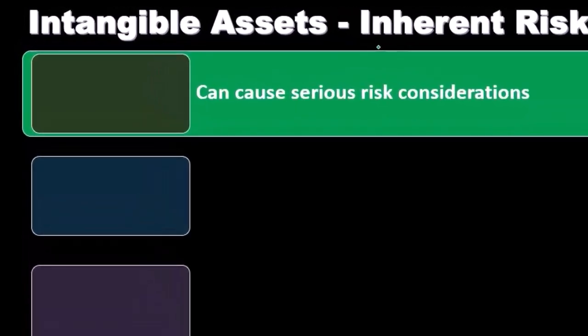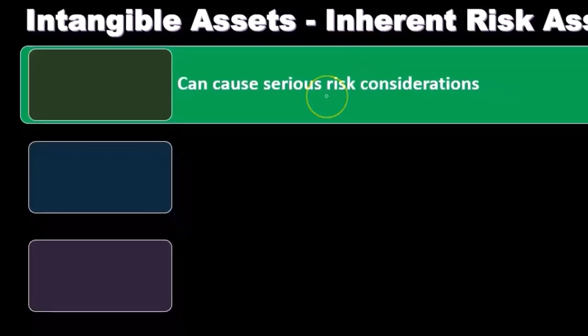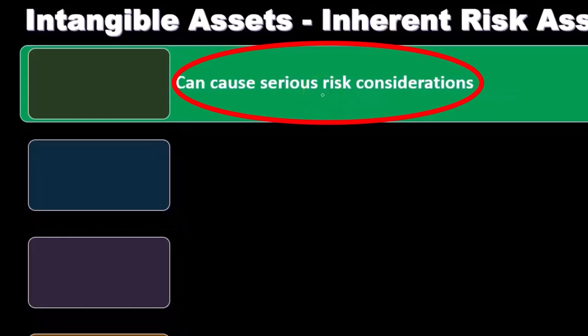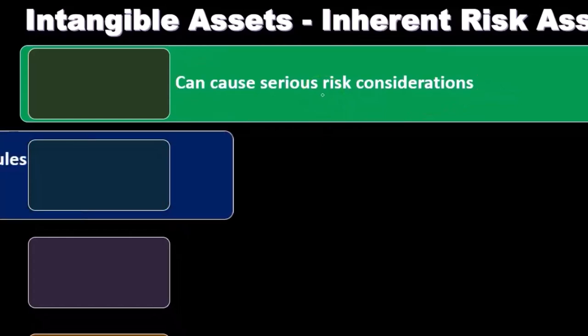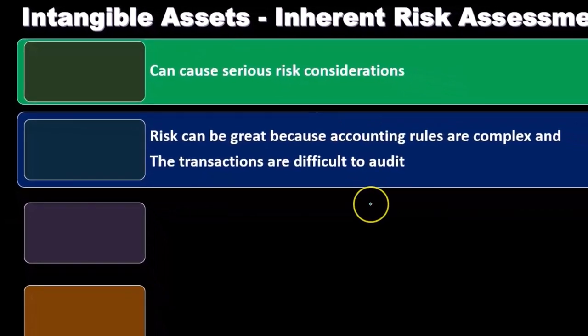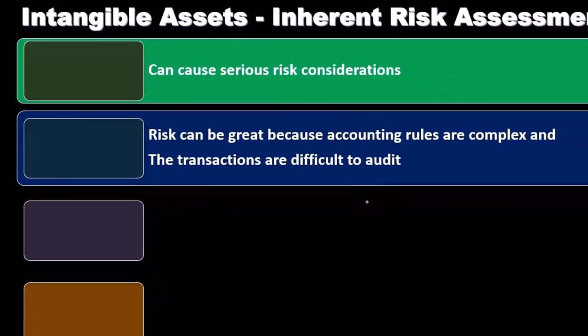Inherent risk is the risk you think about by taking away the controls and considering just the inherent riskiness of those items. When we think about intangible assets, they can cause serious risk considerations. The fact that they're intangible and reported as assets on the balance sheet — yet have no physical substance — makes it a little difficult to verify, test, and prove their value, which is our job as auditors.